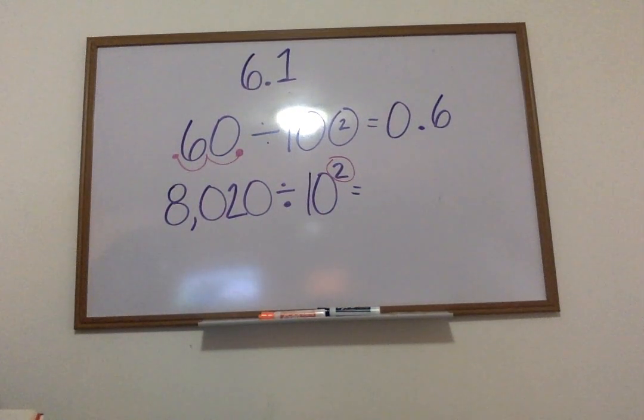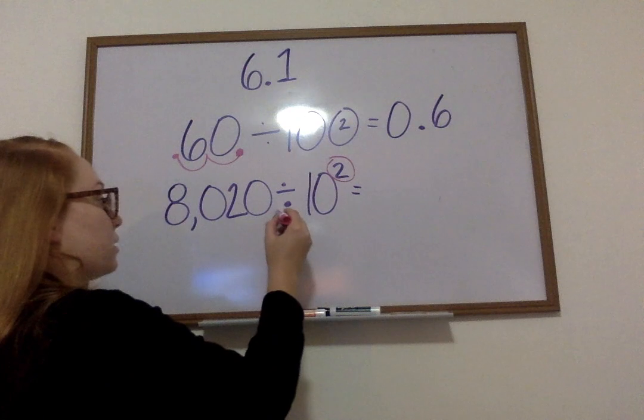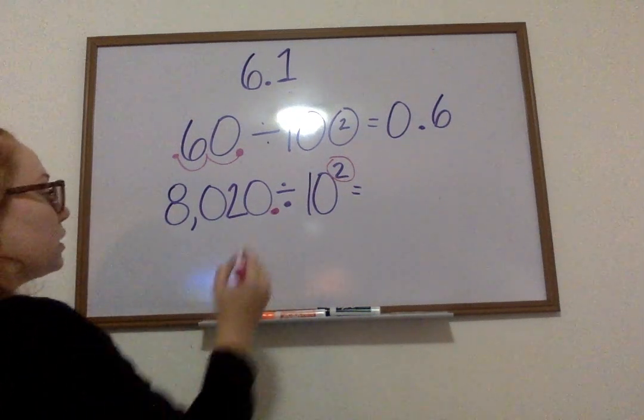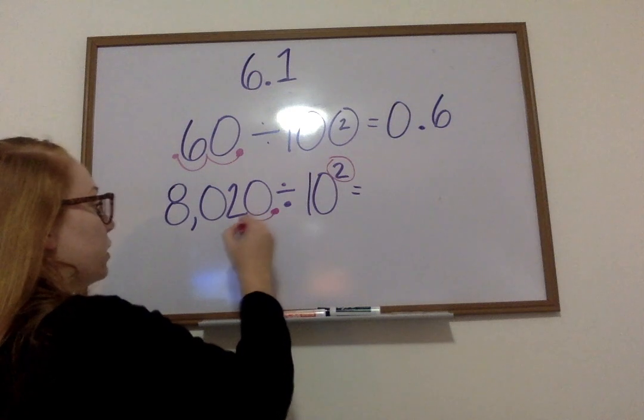So, but I don't see a decimal. When my decimal is hiding and I cannot see it, I know that it's always at the back of the number. That's where my imaginary decimal always lives, right back here at the very back, if I can't see it. It's going to move two times, one, two.